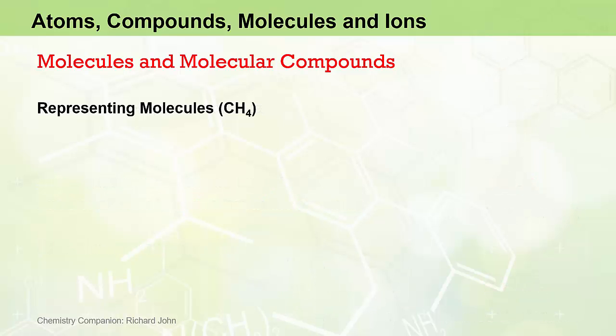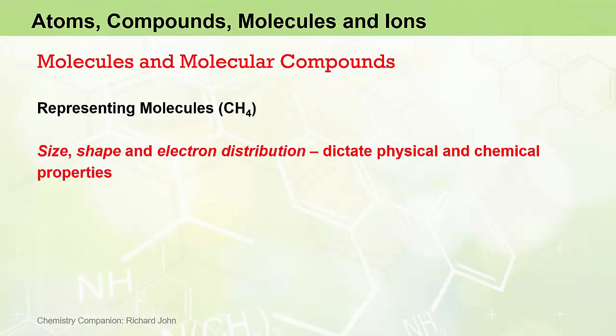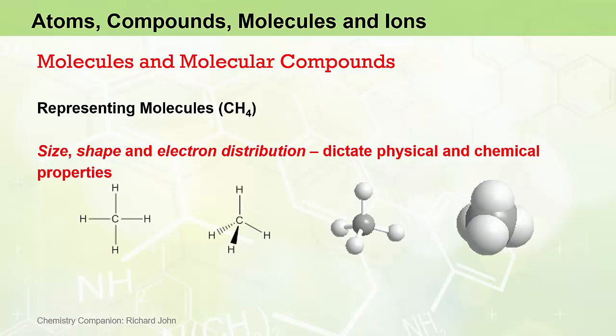While the molecular formula, structural formula, and empirical formula give important information about molecules, they actually give very little information about the size, shape, and distribution of electrons within the molecule. This is important because it is the size, shape, and electron distribution that dictate most physical and chemical properties of molecular substances. So we can use other ways to represent molecules to give us even more information.